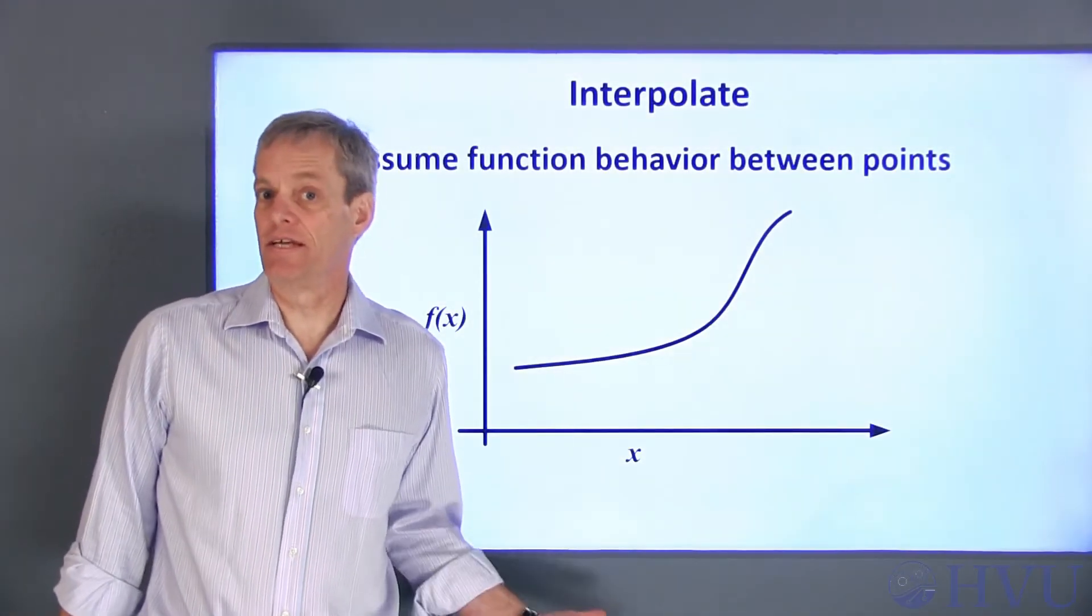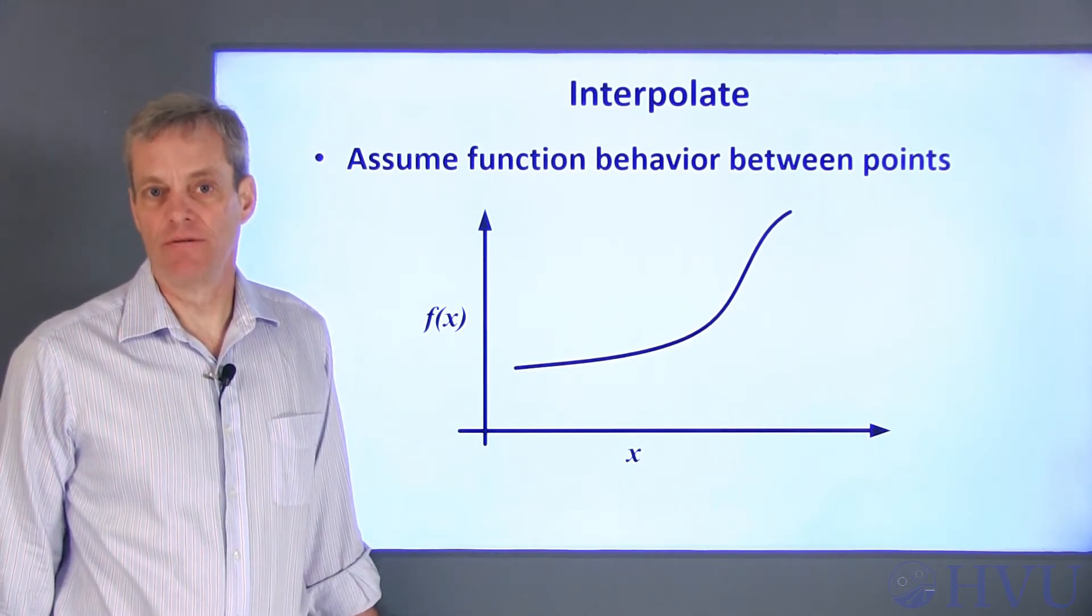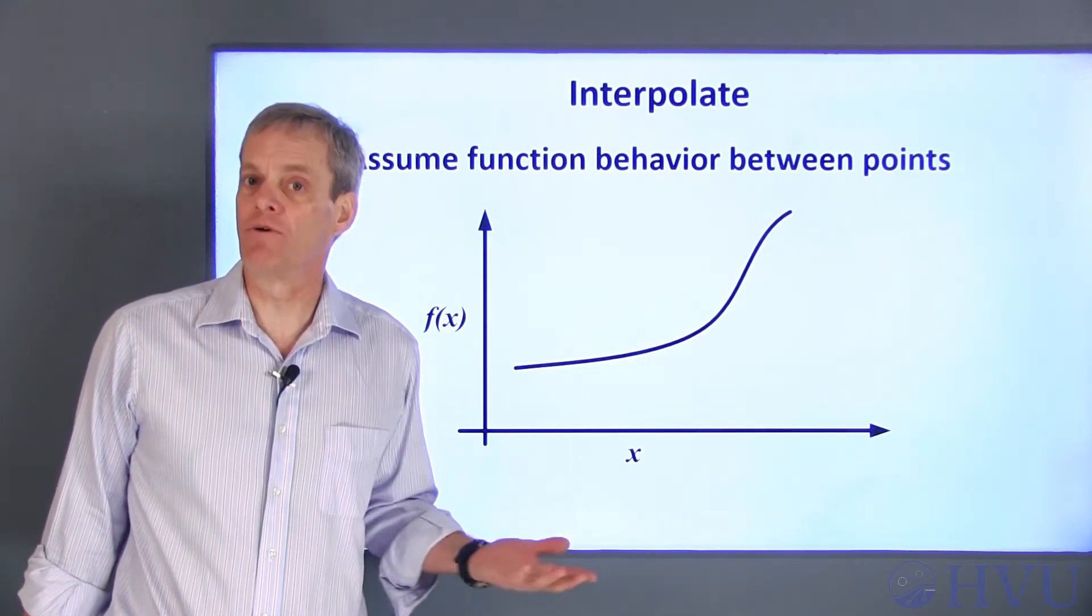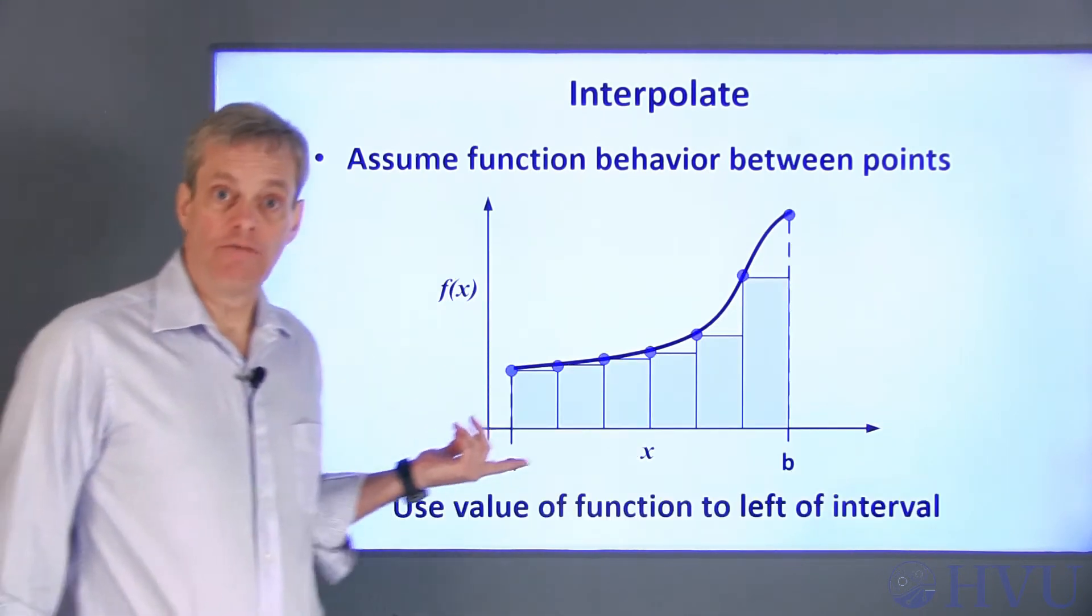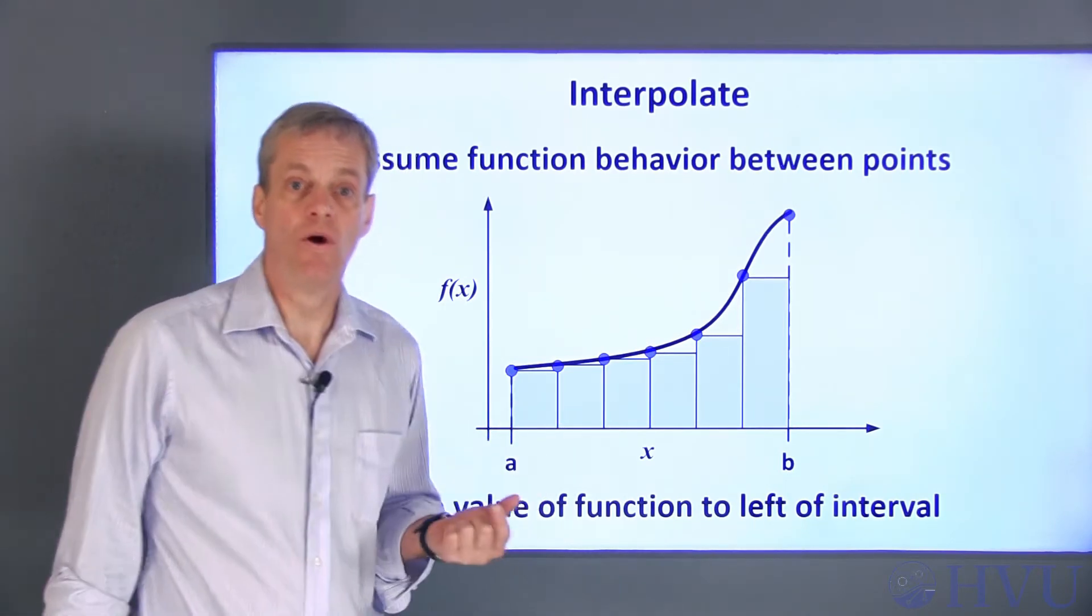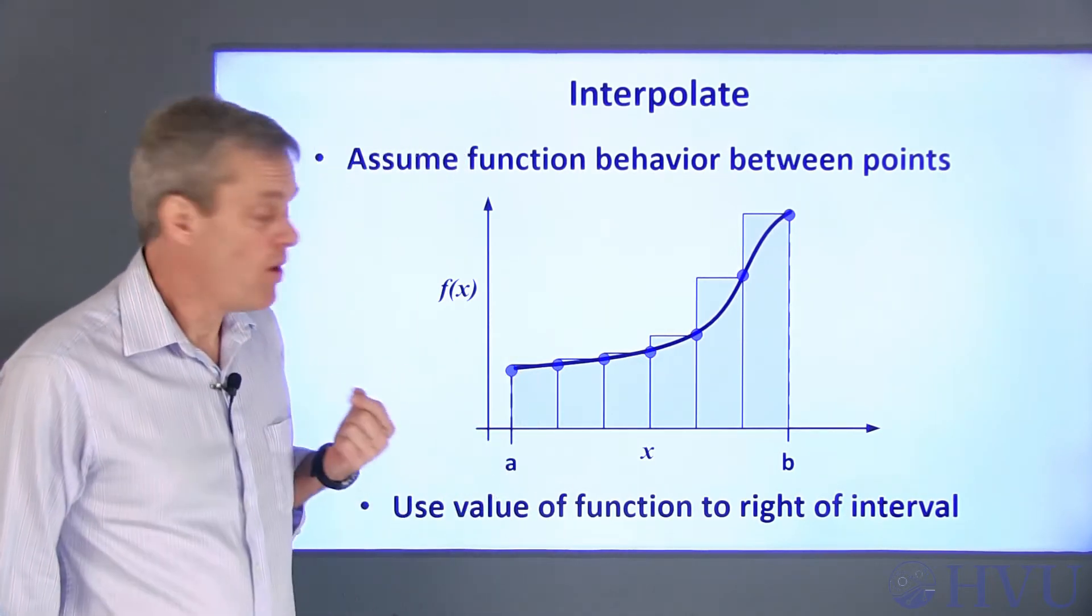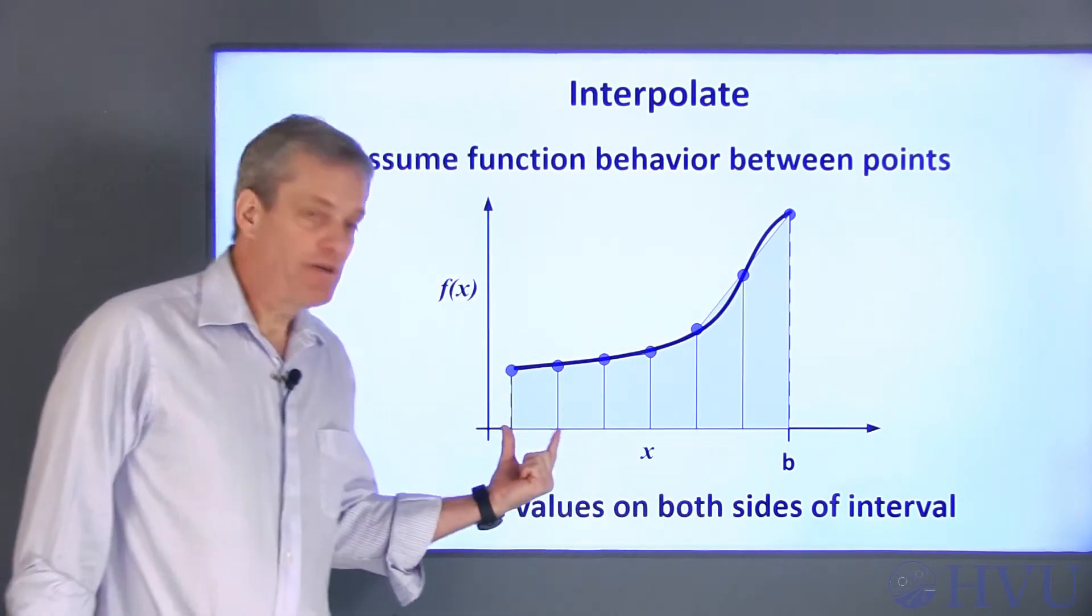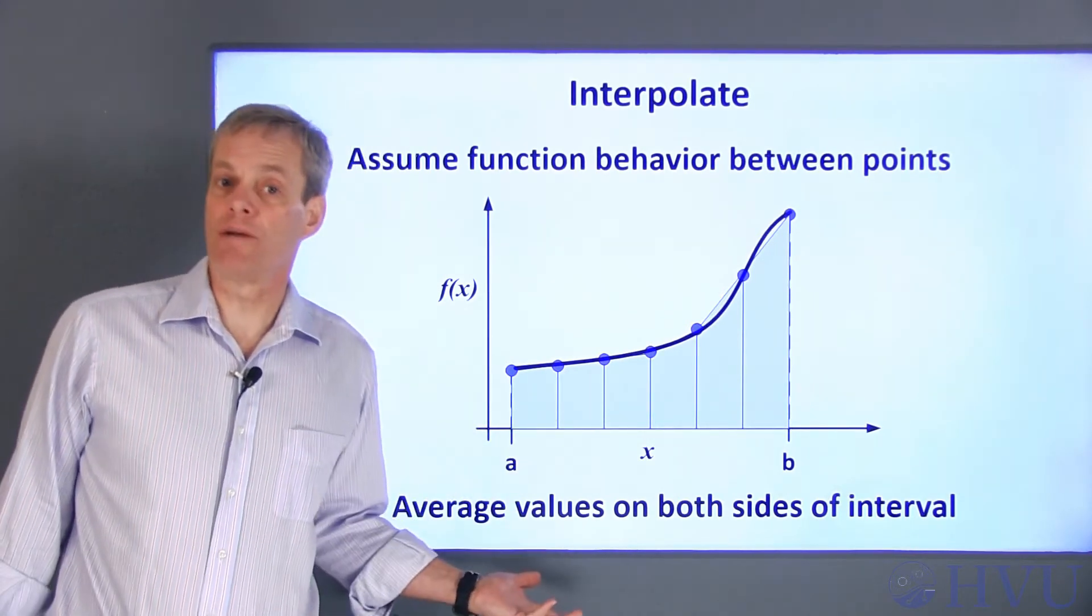We have already discussed the issue of inferring functional values between data points when we talked about interpolation. What we need to do to get the area of the subintervals is also an interpolation problem, in that we are going to assume the function's behavior between given data points. We could, for example, choose to use the data point on the left of the interval as the value of the function within the interval. Or we can use the data point on the right side as the function's value within the interval. Or we can connect the data points with straight line segments. This creates little interval areas that are little trapezoids. So it's called trapezoidal integration, or the trapezoidal rule.